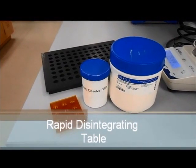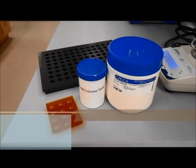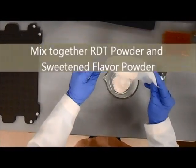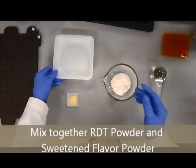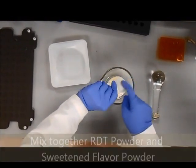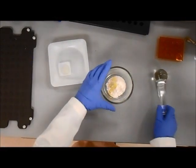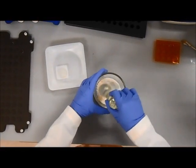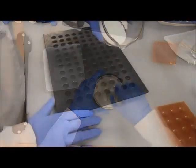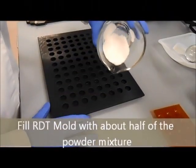Rapid Disintegrating Tablets. Begin by mixing the RDT powder and the sweetened flavor powder. Use the mortar and pestle to reduce particle size and obtain a uniform mixture.